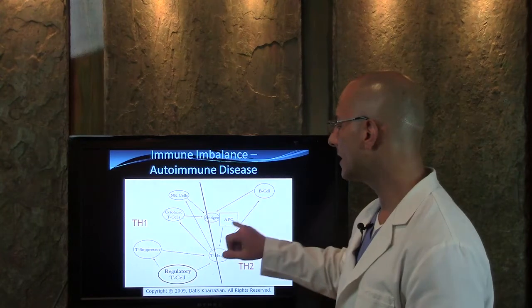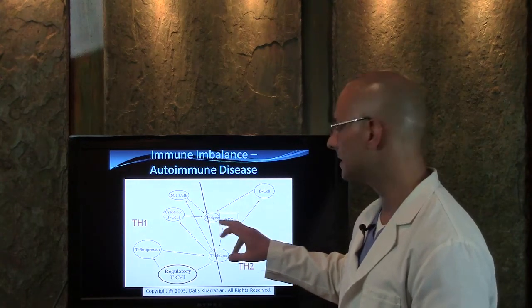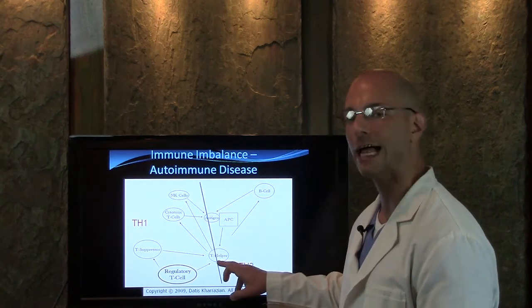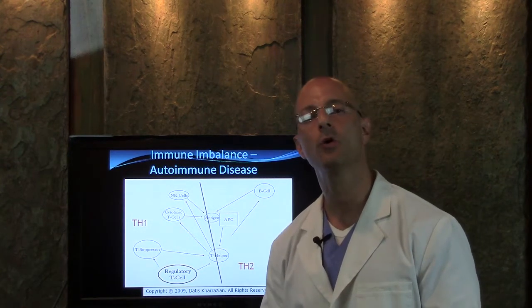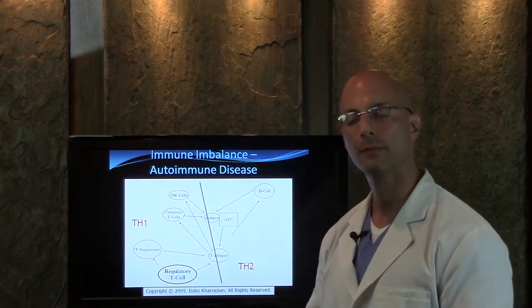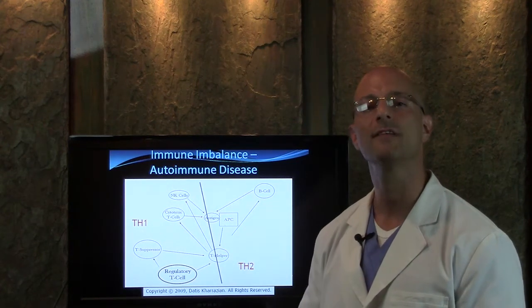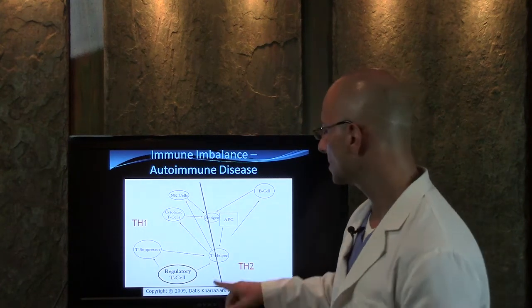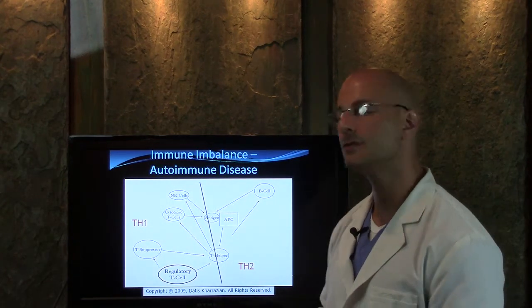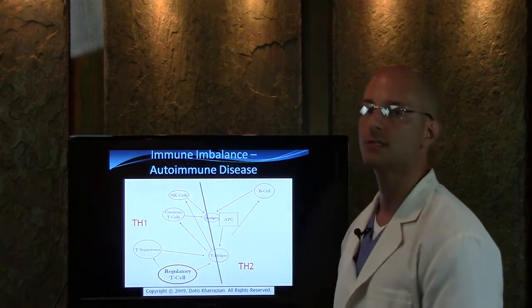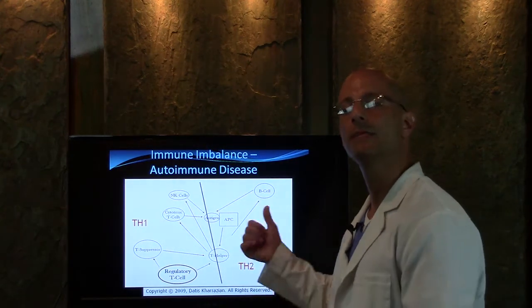When these stressors get in the body, you have what's called an antigen presenting cell that calls out to your T helper. Your T helper cell is like your 911 operator. When you pick up and call 911, somebody broke in my house, there's an invader in the house. So when you call the T helper, the 911 operator of your immune system calls on your B cells. So it calls the police.